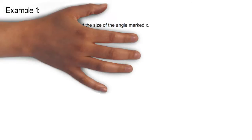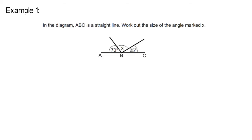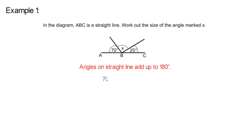Example 1. In the diagram, A, B, C is a straight line. Work out the size of the angle marked X. We know that angles on a straight line add up to 180 degrees. So 70 degrees add X add 25 degrees equals 180 degrees. X add 95 degrees equals 180 degrees. Therefore X equals 85 degrees.